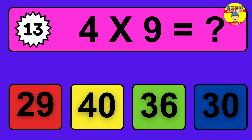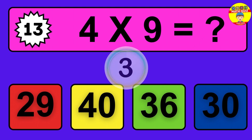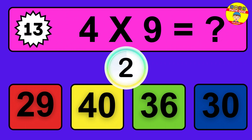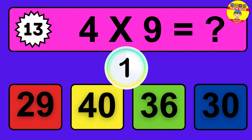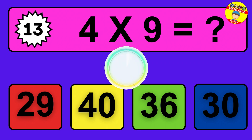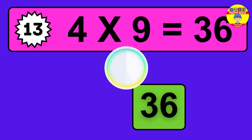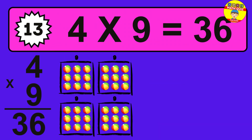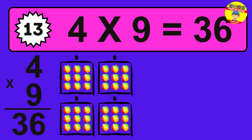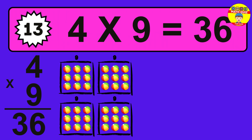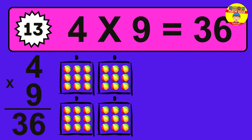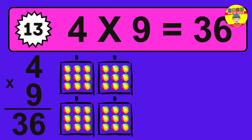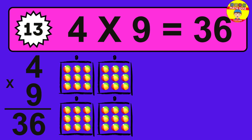Question 13. 4 times 9 equals what? The answer is 4 times 9 is 36. To calculate, we have 4 groups with 9 balls each one. So how many balls do we have? 36 balls.